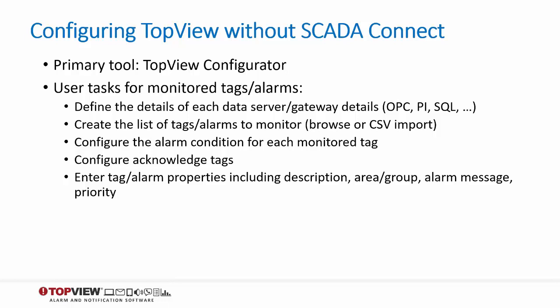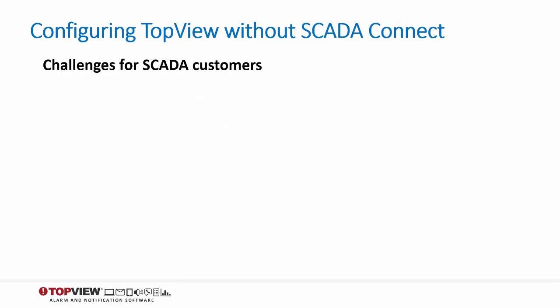The configurator does not require the user to individually configure each alarm. Bulk tag configuration is available through CSV files to reduce the configuration time. But even with these tools, the user still needs to provide the tag properties. Many SCADA customers use Top View without SCADA Connect before it was available, and may currently use Top View with systems not supported by SCADA Connect. So although manual configuration is possible, there are challenges for SCADA customers.